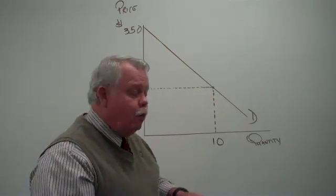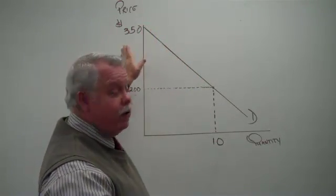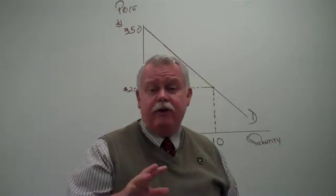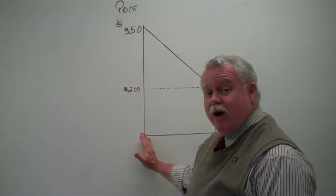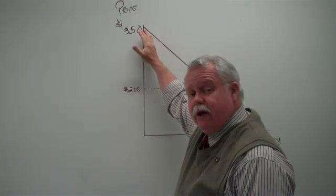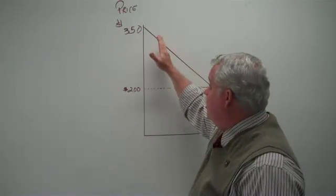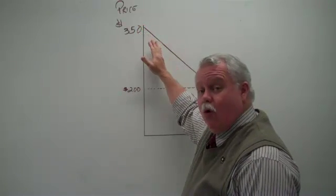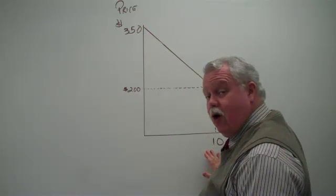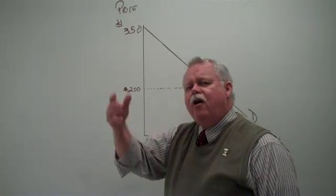If we were to extend that demand curve all the way up to its intercept on the price axis, it would intercept at $350. What's that telling us? It tells us, for example, that there was at least a buyer down here, buyer number one, who was willing to pay a lot more than $200 for that lawnmower, and buyer number two was also willing to pay a lot more, maybe not as much as buyer number one, but more than $200, and so forth all the way down. The first nine lawnmowers, those buyers were willing actually to pay a higher price.